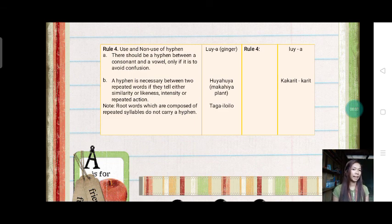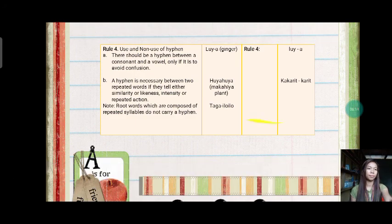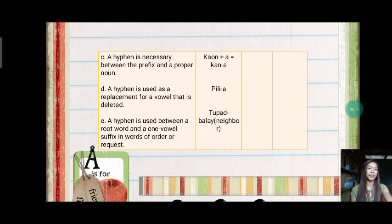And then ito naman, kakarit-karit. Baka na gusto natin, nakita natin na gusto natin, baka kakarit-karit. We use a hyphen there. Letter c. A hyphen is necessary between the prefix and the proper noun. The example is ka-un plus a equals kan-a.